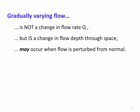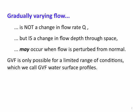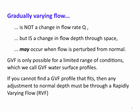Gradually varying flows may occur whenever the flow depth is perturbed from the normal depth, but it's only possible under a limited range of conditions. We call these the GVF water surface profiles. If you cannot find a GVF profile that fits a particular case, then any adjustment to the normal depth must occur through a rapidly varying flow over a short distance, rather than a gradually varying flow over a longer distance.